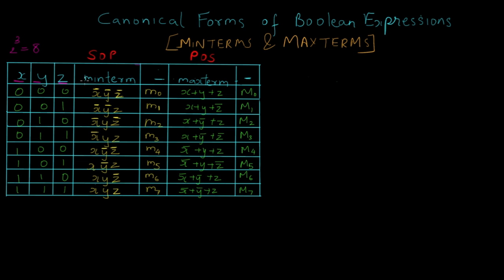The sum of products, or min terms, is associated with the number 1. So I have written the equivalent values in the first row as x bar, y bar, and z bar. We need to convert them to 1 so that the product ultimately results in 1. When we take AND operation between x, y, and z, the only case where the value is 1 is when all variables are 1. So since all these variables are 0, 0, 0, we take their complements, which ultimately gives us value 1. Similarly, product of sum or max terms are associated with the value 0, which is why we simply write x, y, and z. Since all their values are already 0, their sum will be equal to 0.